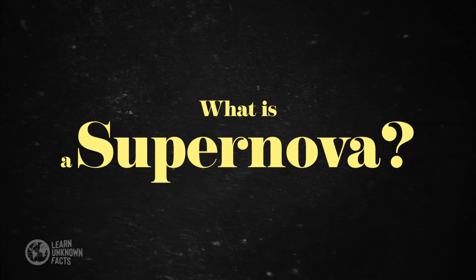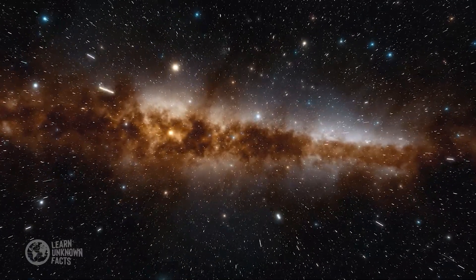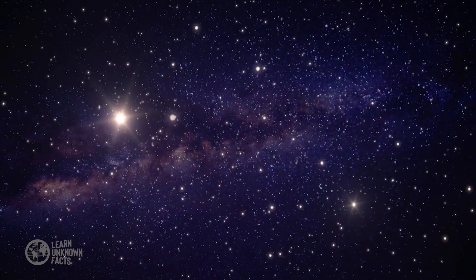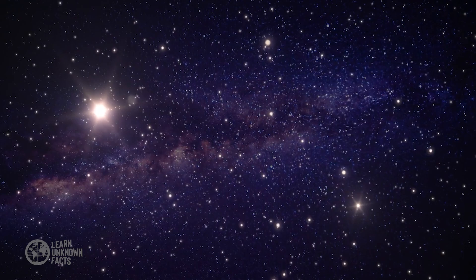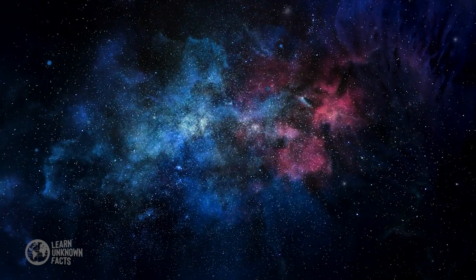A supernova is a powerful and luminous explosion that occurs at the end of a star's life cycle. There are two primary types of supernovas, type 1 and type 2, each with distinct mechanisms and characteristics.